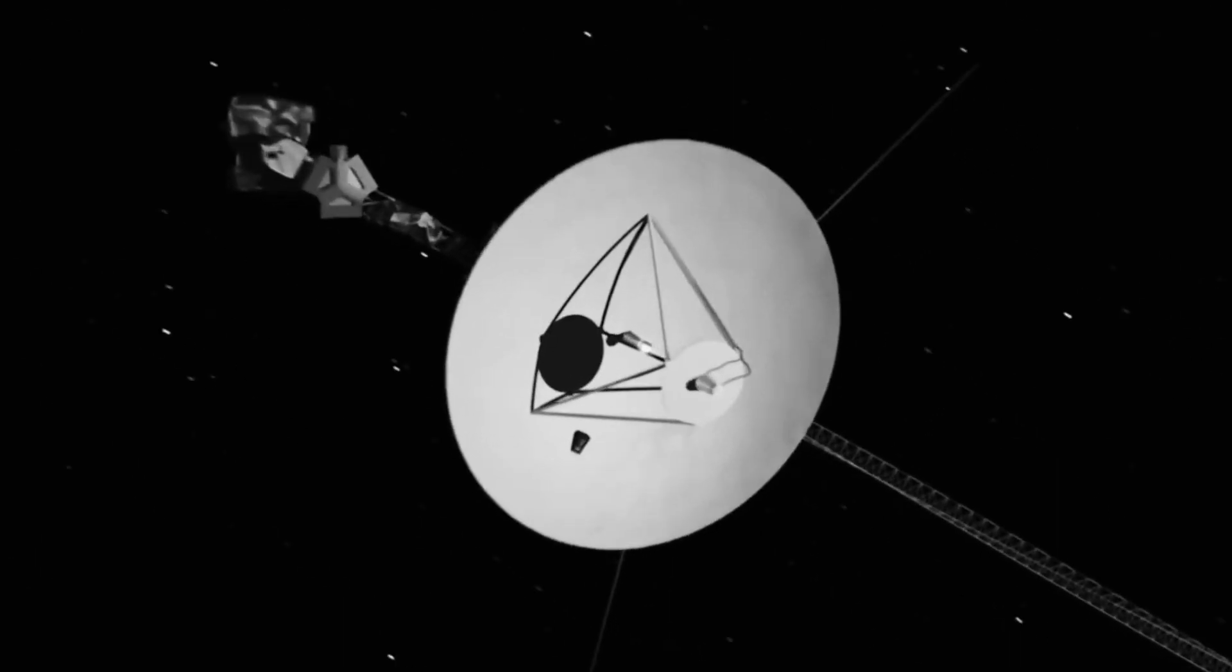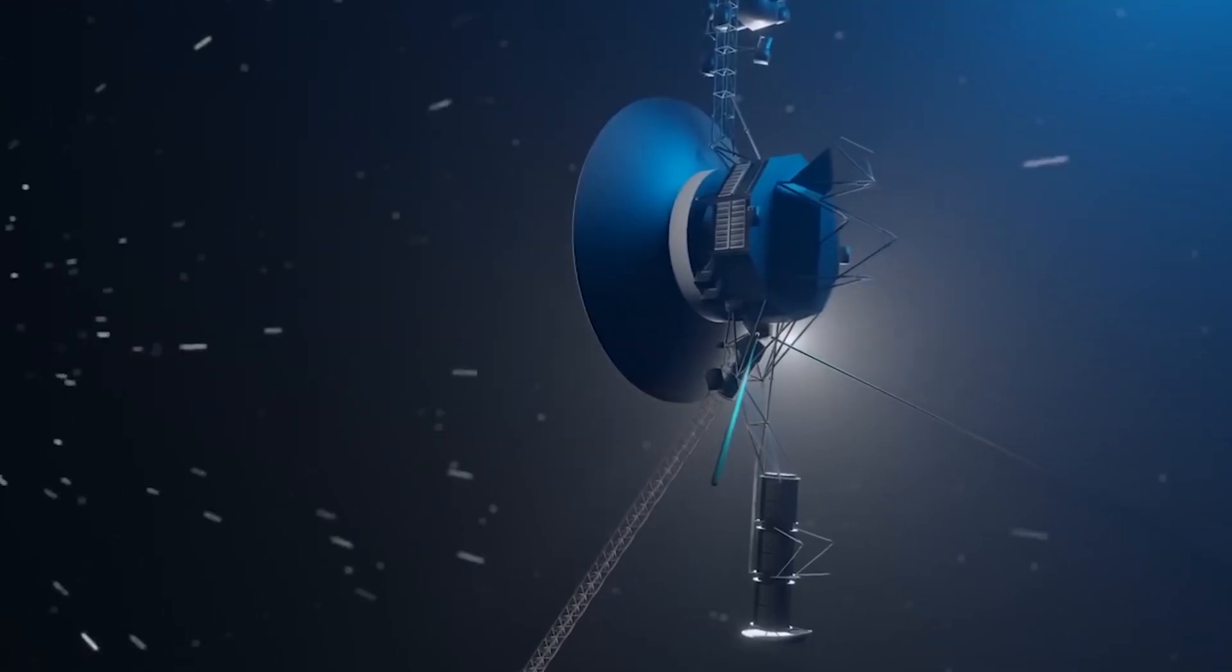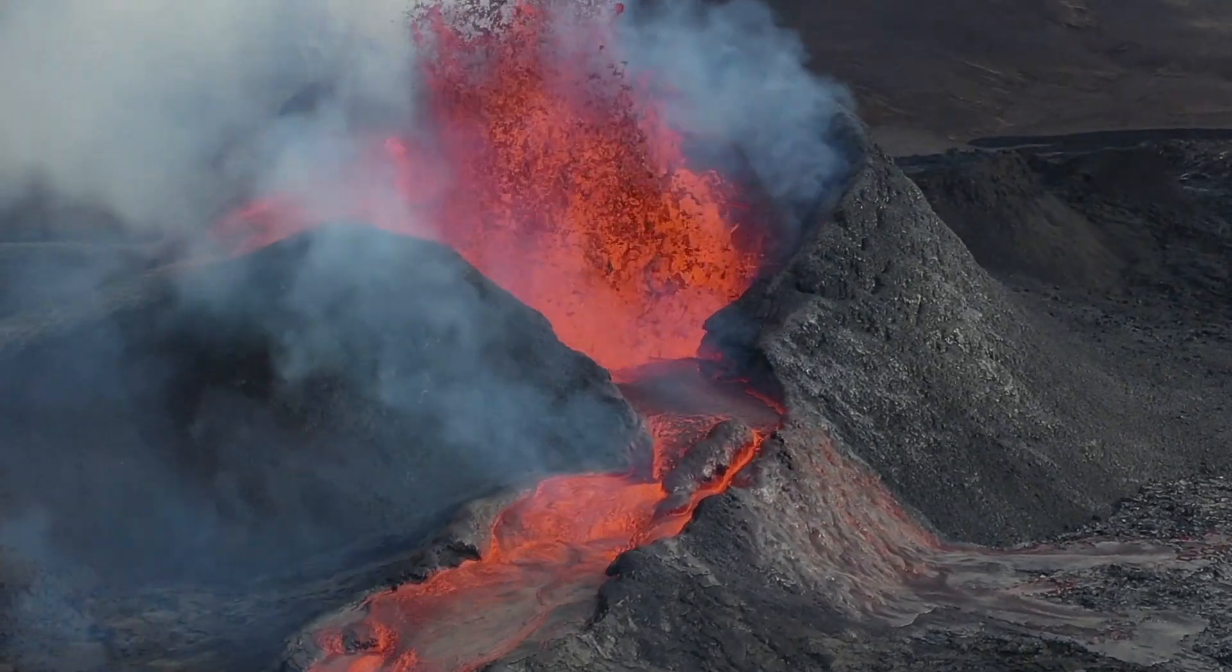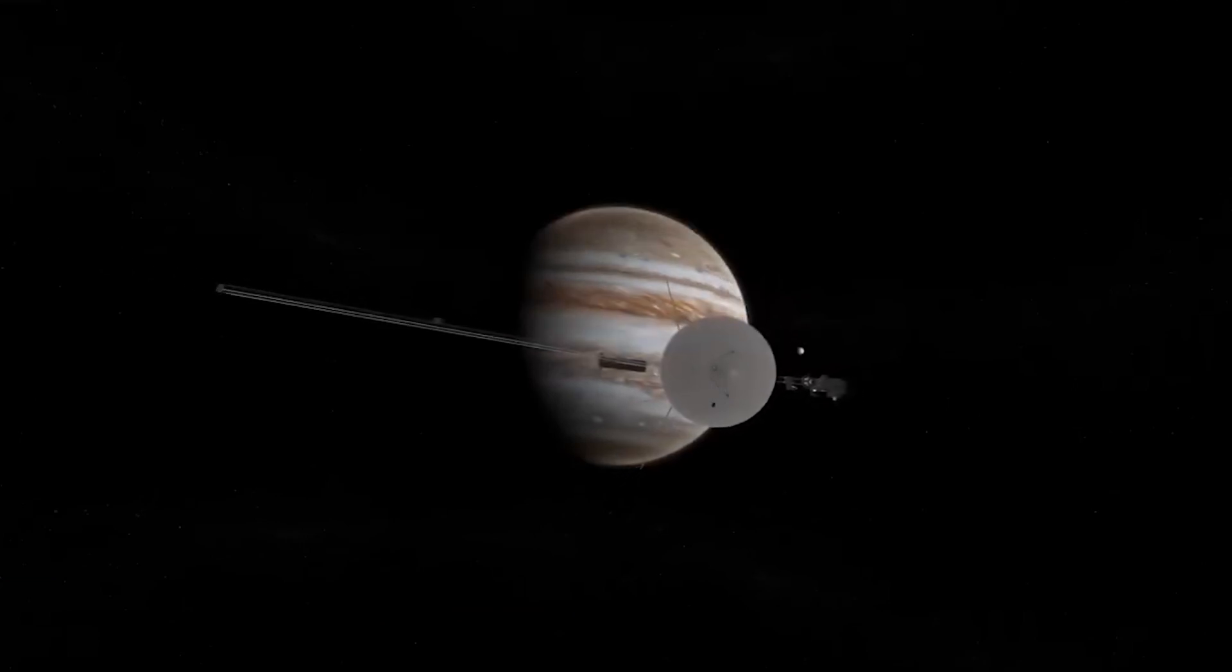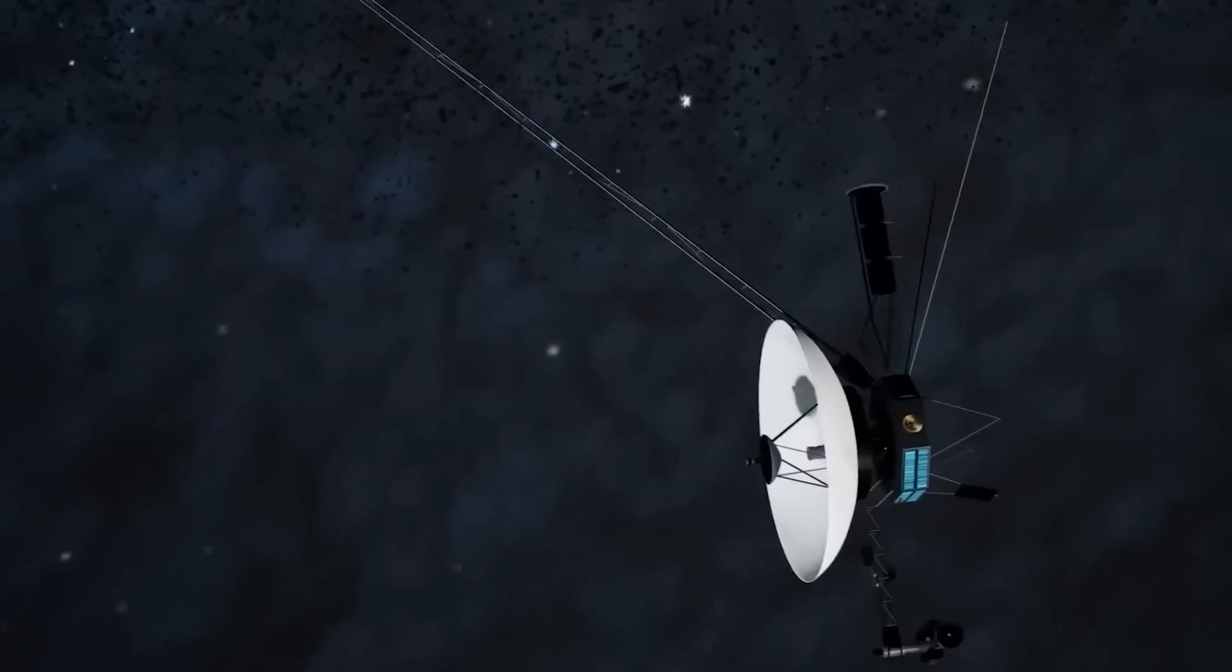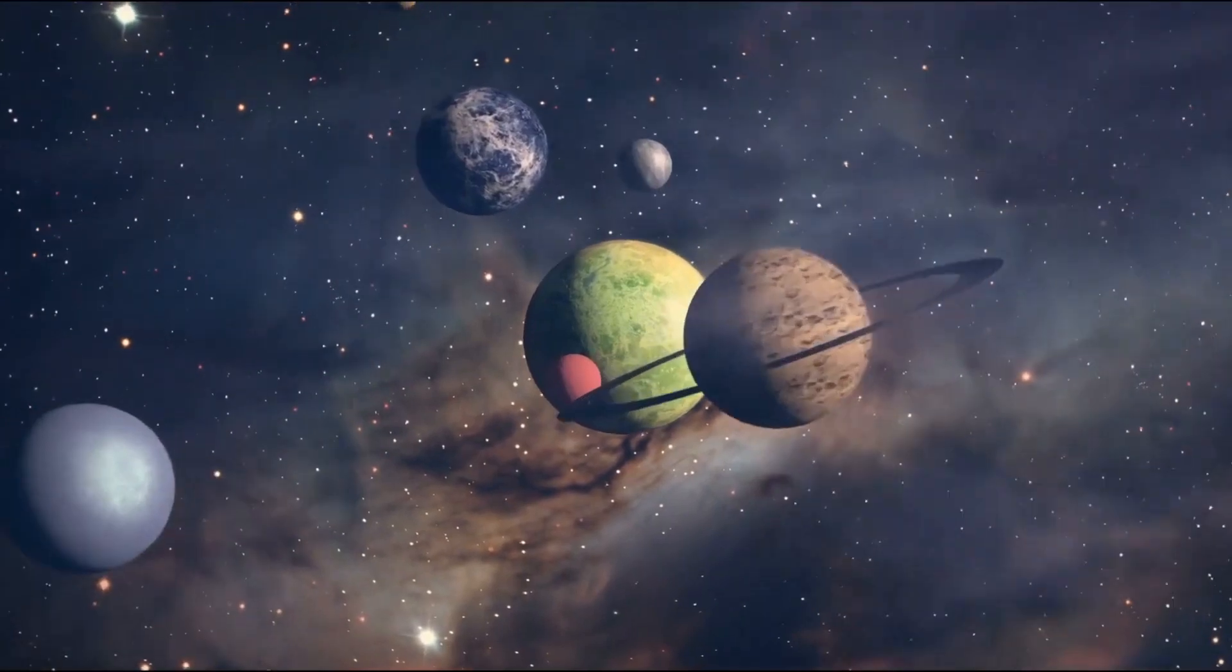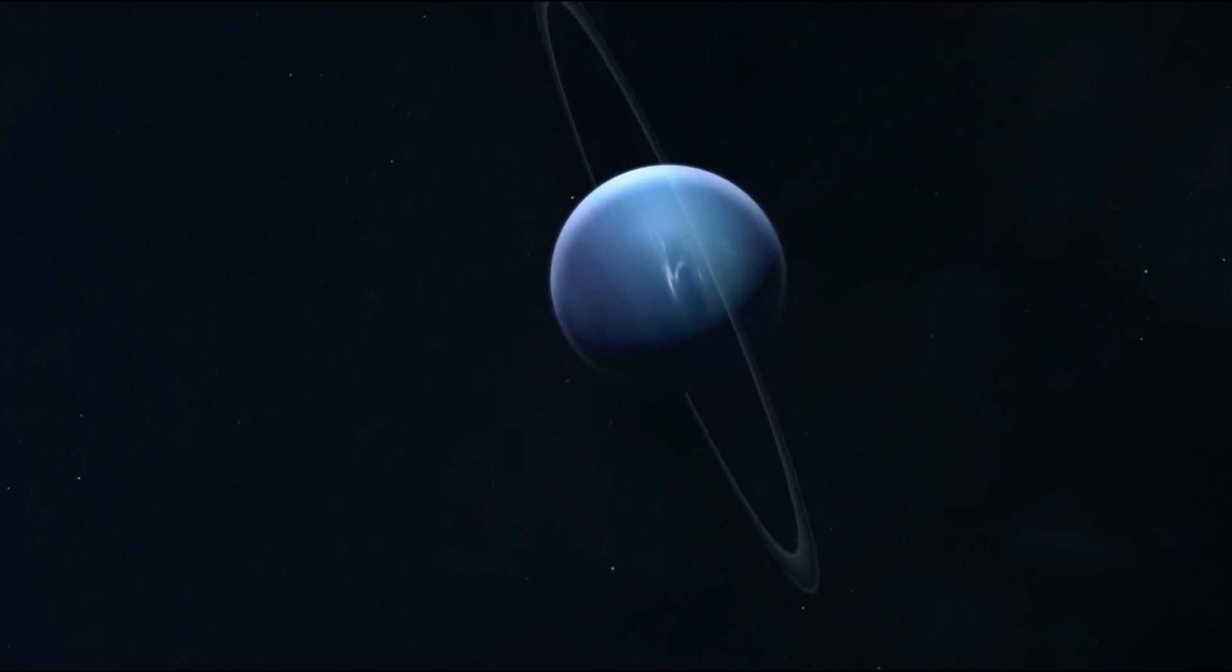At the start of their epic journeys, they gave us incredible close-up images of the moons of Jupiter and Saturn, revealing worlds far more active and dynamic than anticipated. Discoveries of active volcanoes and ice fields forever changed our understanding of these distant corners of the solar system. Voyager 2, in particular, was the first spacecraft to approach Uranus in 1986 and Neptune in 1989, becoming the only probe that visited those planets, surprising scientists with astonishing findings in previously unexplored territories.